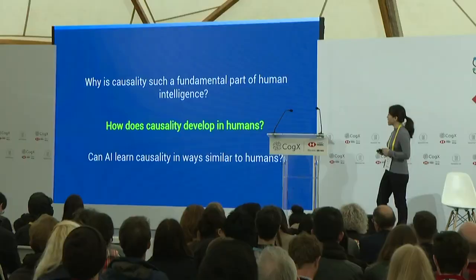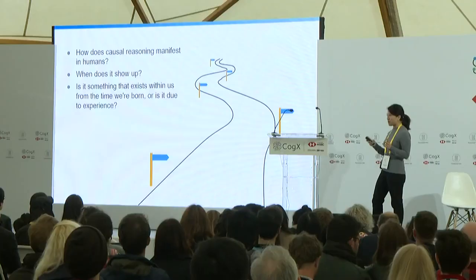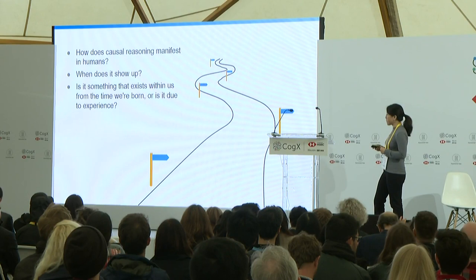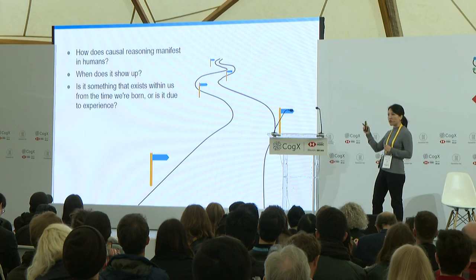But of course humans are not conducting randomized controlled trials on a day-to-day basis to make decisions and understand causality. So that leads to the next part of my talk: how does causality develop in humans? When does it show up? Is it something that exists from the time we're born, or something that develops with experience? To foreshadow a little bit, I'm going to show you some evidence that demonstrates it's actually both — it not only develops along a set developmental trajectory, but later on in life it starts to become more and more influenced by experience and by the kind of environment we're inhabiting.